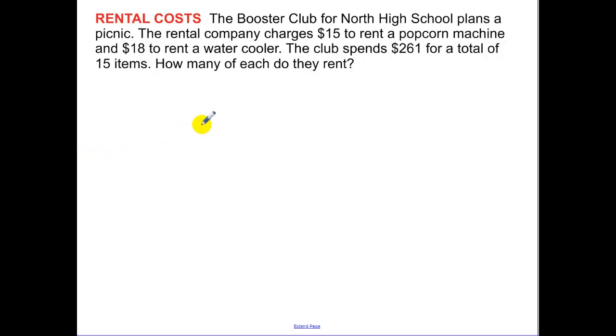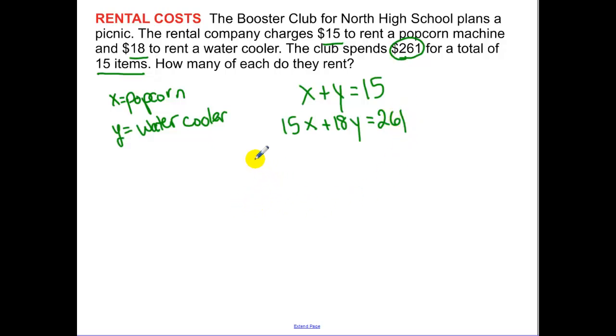Our last example. The booster club for North High School plans a picnic. The rental company charges $15 to rent a popcorn machine and $18 to rent a water cooler. They want to spend $261 for a total of 15 items. So how many of each do they want to rent? We have to look at our popcorn. Y is going to be our water cooler. The amount of popcorn plus the amount of the water coolers has to equal 15. Now let's talk about our cost equation. It's $15 per popcorn machine plus 18 times the amount of water coolers is going to equal 261.